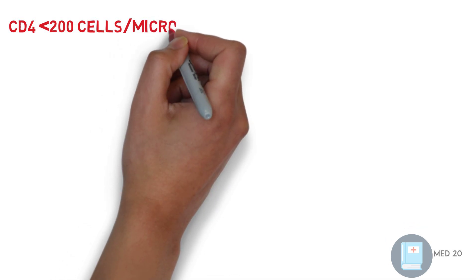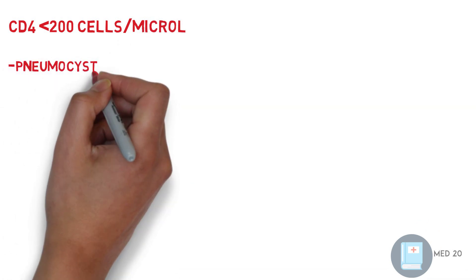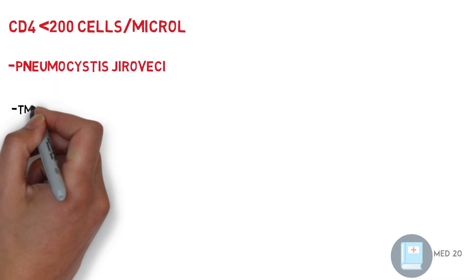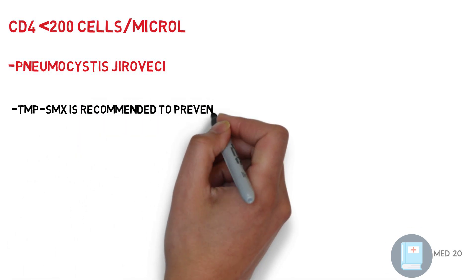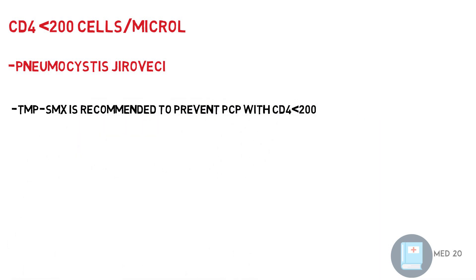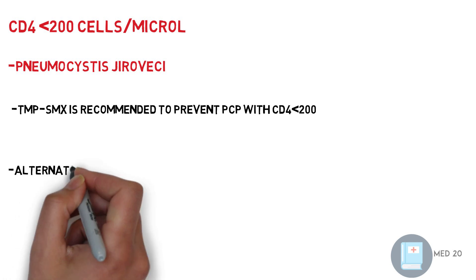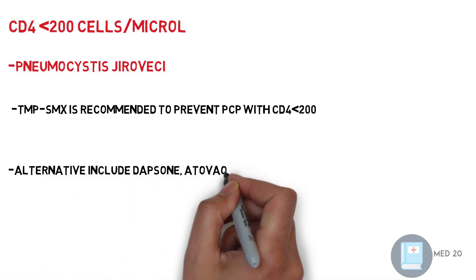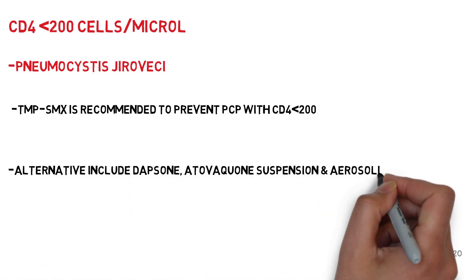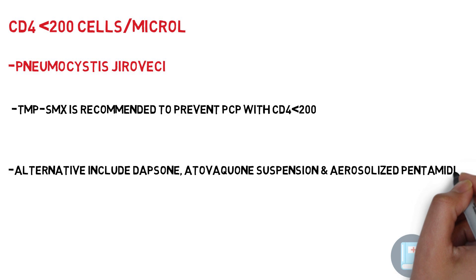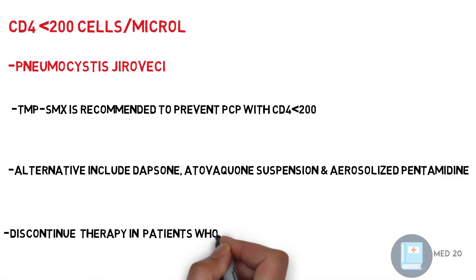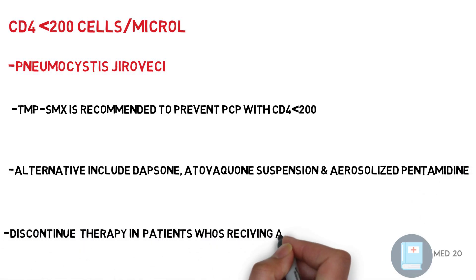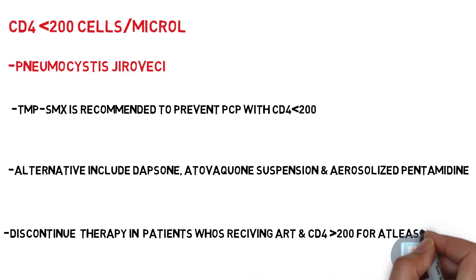CD4 less than 200 — Pneumocystis jirovecii pneumonia or PCP: Bactrim is recommended to prevent PCP with CD4 less than 200. Other alternatives include dapsone and others. Discontinue therapy in patients receiving ART with CD4 greater than 200 for at least three months.